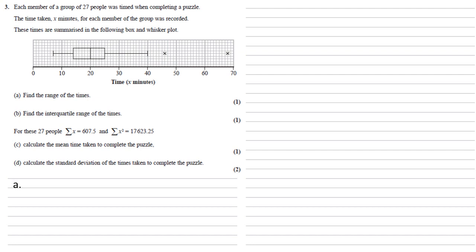For part A, we need to find the range of the times. So the range is the largest value, that cross on the far right at 68, minus the lowest value, the leftmost value at the end of that left hand whisker at 7. So 68 minus 7, we have a range of 61.